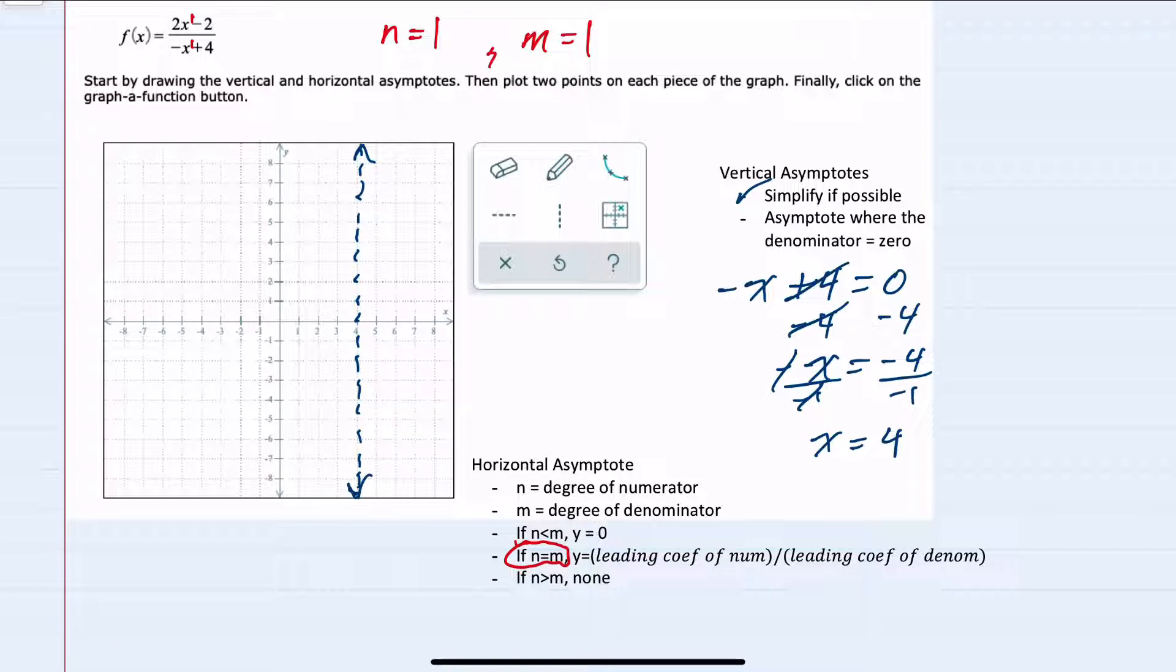our horizontal asymptote is going to be y equals the leading coefficient of the numerator, which is 2, over the leading coefficient of the denominator, which is minus 1. So our horizontal asymptote is going to be at y equals negative 2.